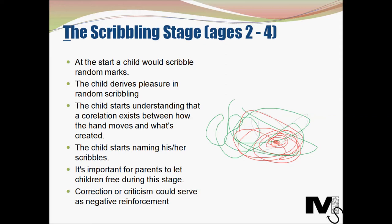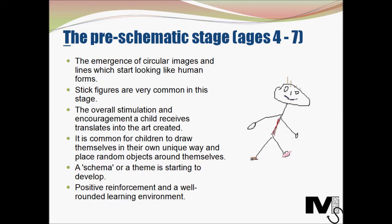This starts motivating the child to continue and further develop motor skills. The child then begins naming its scribbles — essentially starting to think in terms of pictures and symbols. Naming scribbles is therefore quite an important development in both artistic and mental development in general. It's important for parents at this stage to let children be free, as any correction or criticism could serve as negative reinforcement and should be avoided.